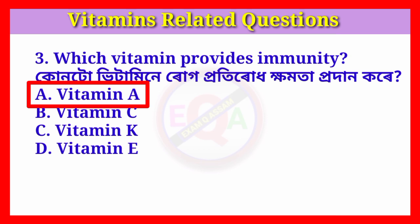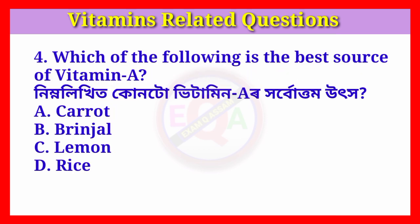Question number four: Which of the following is the best source of vitamin A? Answer: Option A, carrot.